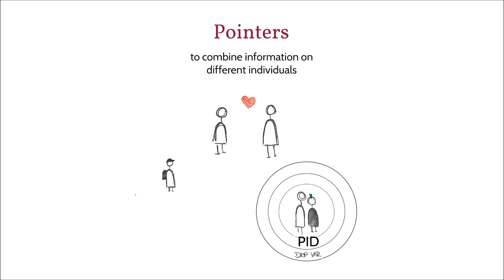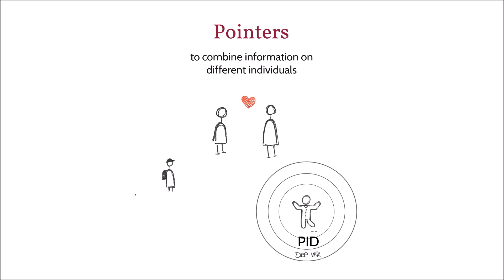We also provide pointers to siblings' IDs. The pointer SIB P and R can be found in the BioSIB dataset. For twins, triplets, and the few quadruplets in the SERP, you will find pointers in the BioTwin dataset. The pointers are called P and R twin, P and R trip, and P and R quad.